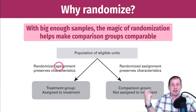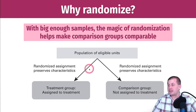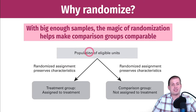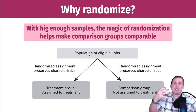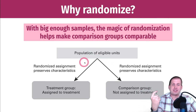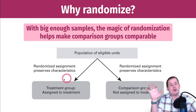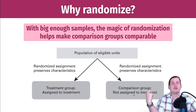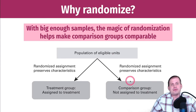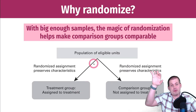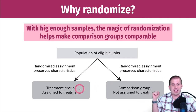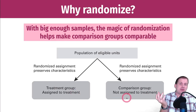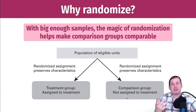Notice how randomized assignment preserves characteristics. Some characteristics of the population — let's say 60% of the population is male. If you randomly assign enough people to treatment and control, then roughly 60% of the treatment group and roughly 60% of the comparison group are also going to be male. If you don't randomly assign and maybe the program works better for males, then they might all self-select into the treatment group, giving you 90% male in one group and only 10% in the other.